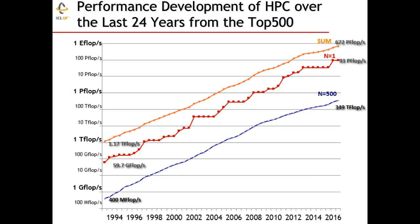You can see where things have been going over 24 years. The slope of the curve behaves something like Moore's Law, but in this case the line is doubling not every 18 months but every 14 months — boosted primarily by parallel computing. If we take a look at the machine at position number 500 today, we see that back in 2003, the sum of all the computers was equal to the machine that's at the bottom of the list today.